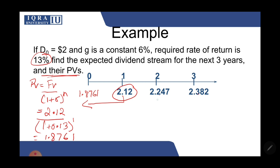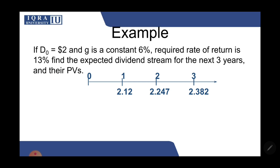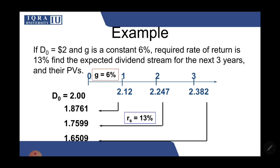Similarly, for D2: PV = 2.247 divided by (1 + 0.13)^2, which gives a present value of 1.7599. And for D3, discounting back 3 years using power 3, you get a present value of 1.6509.